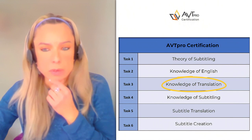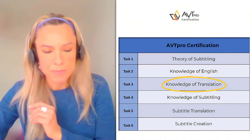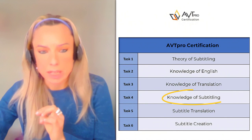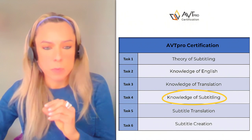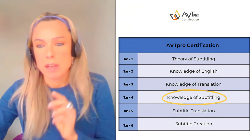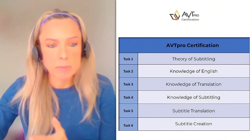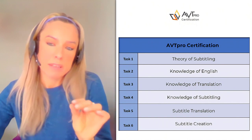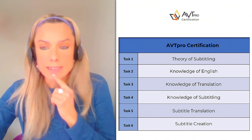The third task is knowledge of translation — it's English into the target language and it evaluates your expertise in translation within your language pair. The fourth task is knowledge of subtitling, also English into the target language, and in this task we evaluate your technical knowledge of subtitling: spotting, line breaks, reading speed, punctuation, and so on. You're basically asked to identify errors in subtitles.